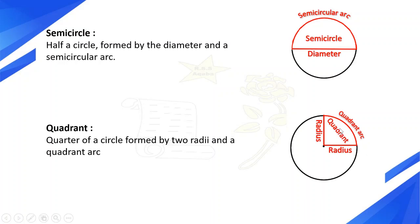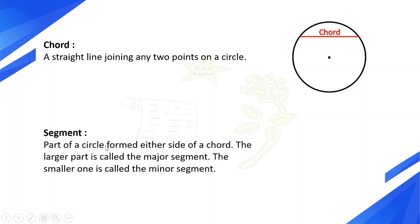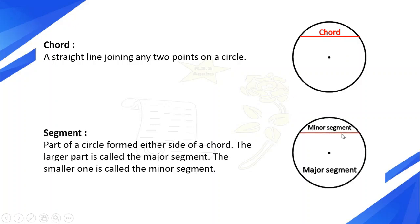Chord: a straight line joining any two points on a circle. Segment: part of a circle formed either side of a chord. The larger part is called the major segment and the smaller one is called the minor segment.